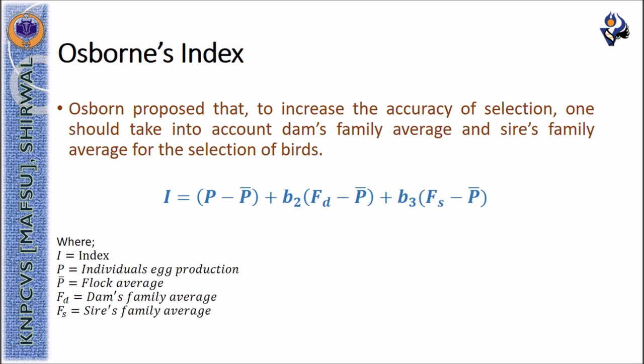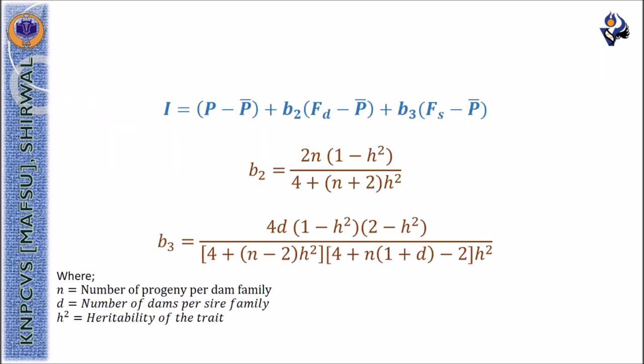Osborn proposed that to increase the accuracy of selection one should take into account dam's family average and sire's family average for selection of birds. Therefore, Osborn's index value can be calculated with the formula p minus p bar plus b2 multiplied by fd minus p bar plus b3 into fs minus p bar, where i represents index value, p is the individual's egg production, p bar is the flock average, fd is the dam's family average, fs is the sire's family average. The values of b2 and b3 can be obtained as shown in this slide where n is the number of progeny per dam family, small d is the number of dams per sire family, and h square is the heritability of the trait.